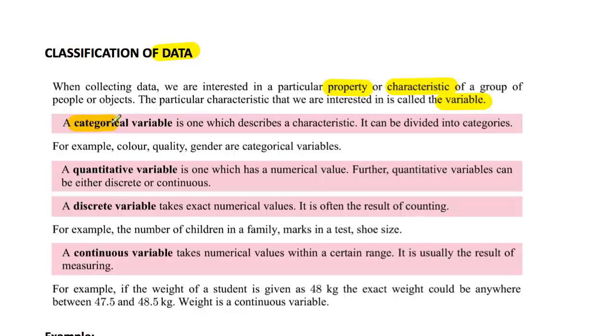Firstly, variables that are categorical. These are ones or a variable which is one that describes a characteristic. You can divide these into different categories. You could say what color is it, its quality - low quality, high - gender, male, female. These are all categorical type variables. So if you put things into categories, that's what they are, categorical data.